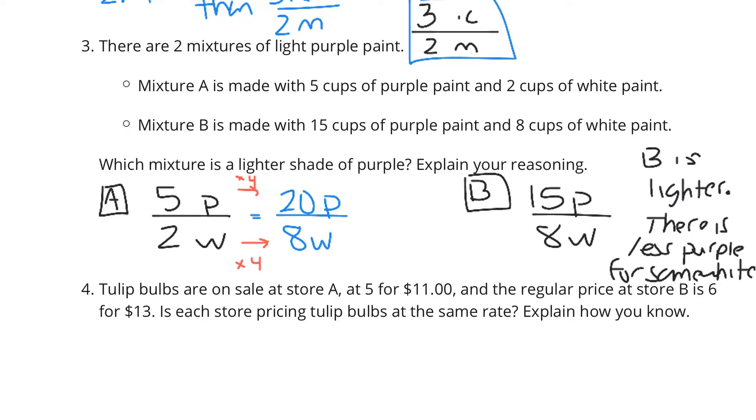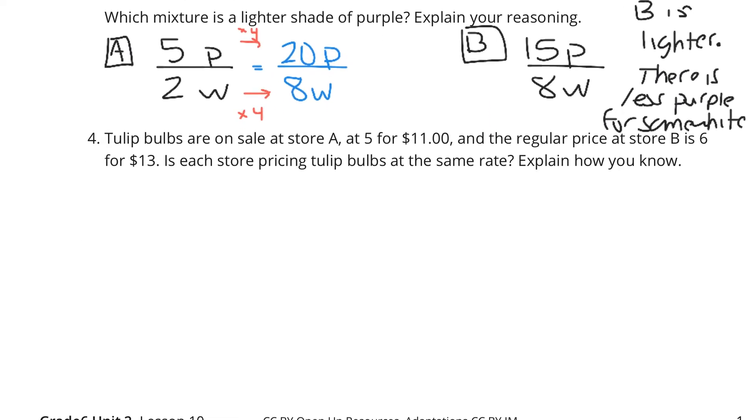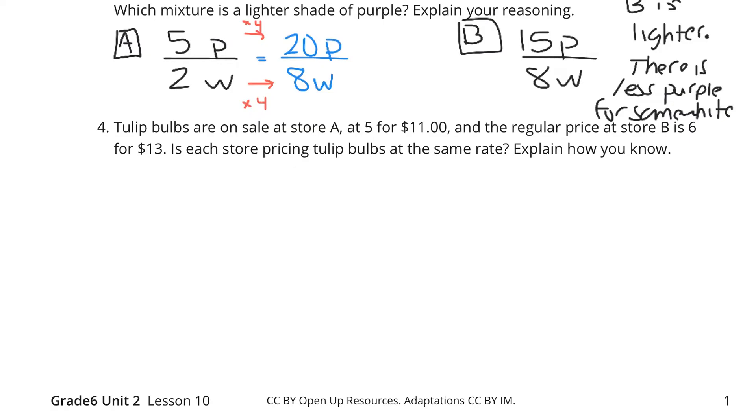Question 4. Tulip bulbs are on sale at store A at 5 for $11. And the regular price at store B is 6 for $13. Is each store pricing tulip bulbs at the same rate? Explain how you know.